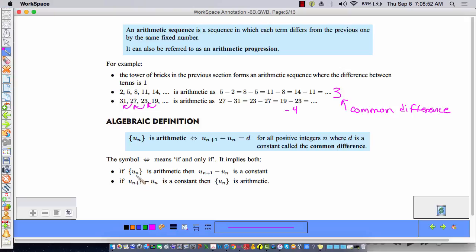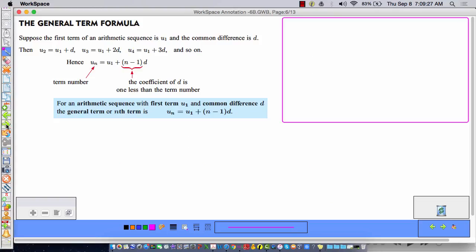And here we have it symbolically. If the general term is arithmetic, then the term minus the previous term is a constant. So let's think about this, u sub n plus 1 minus u sub n. So let's just suppose n equals 5. Then this would be u sub 6, right? 5 plus 1 minus u sub 5. And that has to equal a common difference d throughout. And if that does happen, then it's arithmetic.